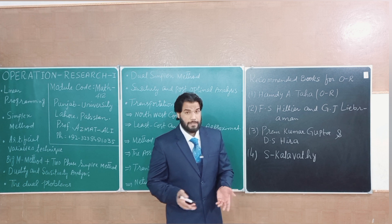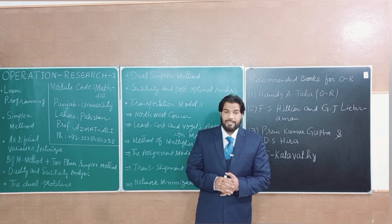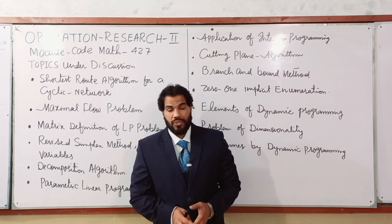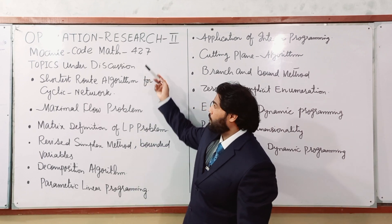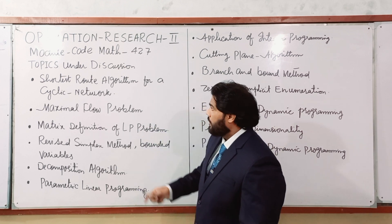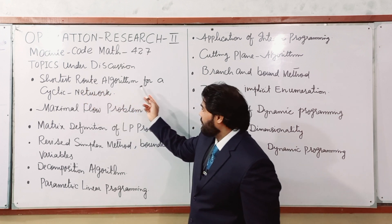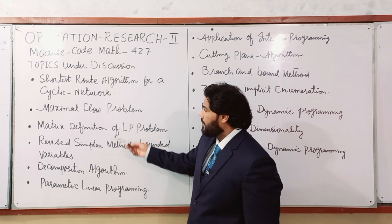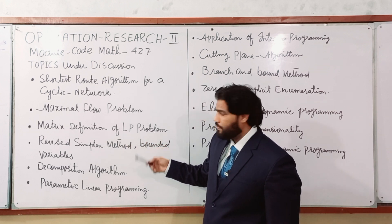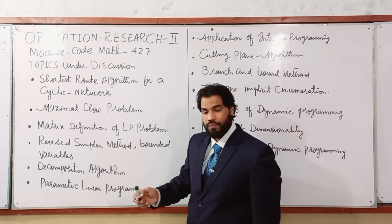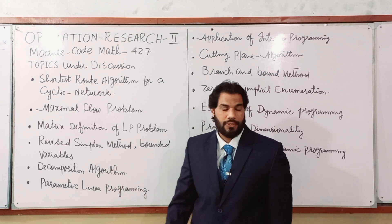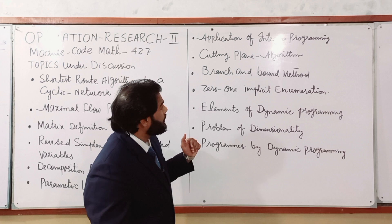Next, we will discuss the course content of Operation Research 2, whose module code is MATH 427. The following topics will be under discussion: the shortest route algorithm for an acyclic network, maximal flow problem, matrix definition of linear programming, revised simplex method, bounded variables, and decomposition algorithm.